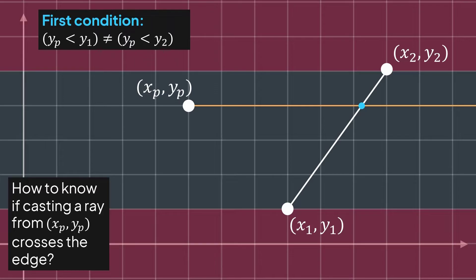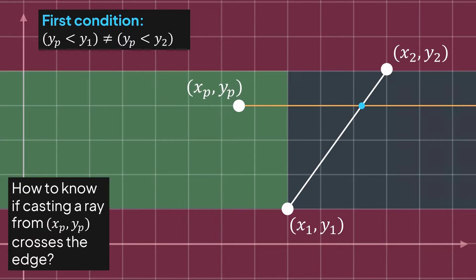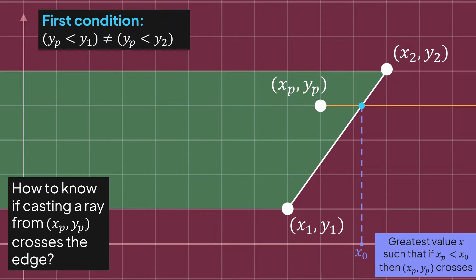That was for yp, what about xp? Well, we know that if xp is smaller than both x1 and x2, it will surely cross. And if it's higher than both x1 and x2, it won't cross. But the problem is when it's in the middle, because depending on its yp, we have a part that is before the edge and a part that is after. So we need to find the value x0 of the intersection between the line yp and the edge. Because all values x before x0 will surely cross the edge. We will just have to check if xp is smaller than it.